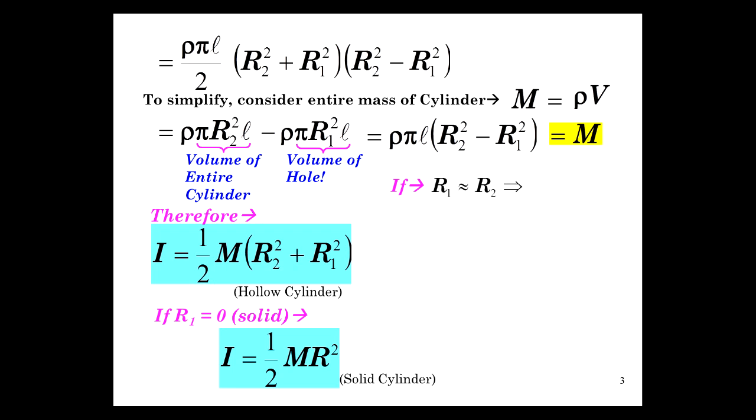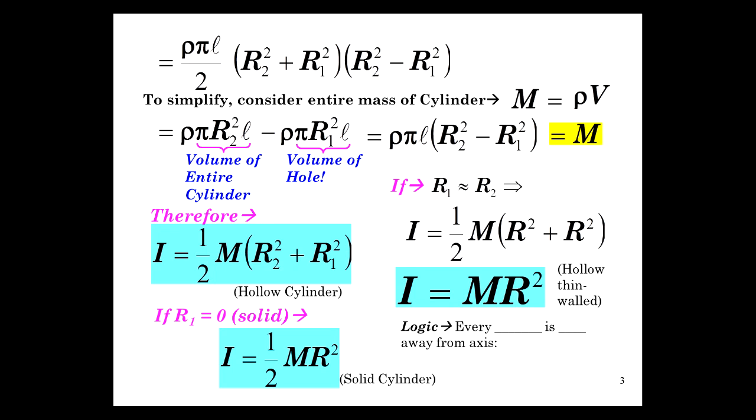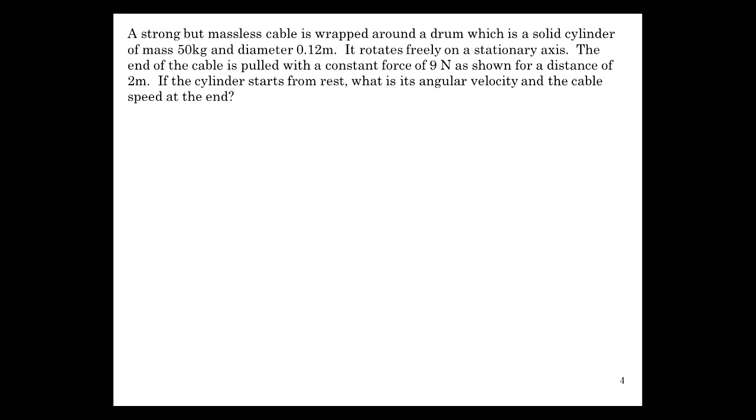If R1 is approximately equal to R2 in the thick-walled cylinder, so set them about equal, well, that means it's approaching a thin-walled cylinder, right? So we have one half M, just R1 is about equal to R2, so just call it R. So we have one half M R squared plus R squared, which is, again, M R squared, the same thing we got for a thin-walled cylinder. And basically, if you have that, then the R's are all the same. Every delta M is R away from the axis. So the sum of all those little delta M's is the total mass.